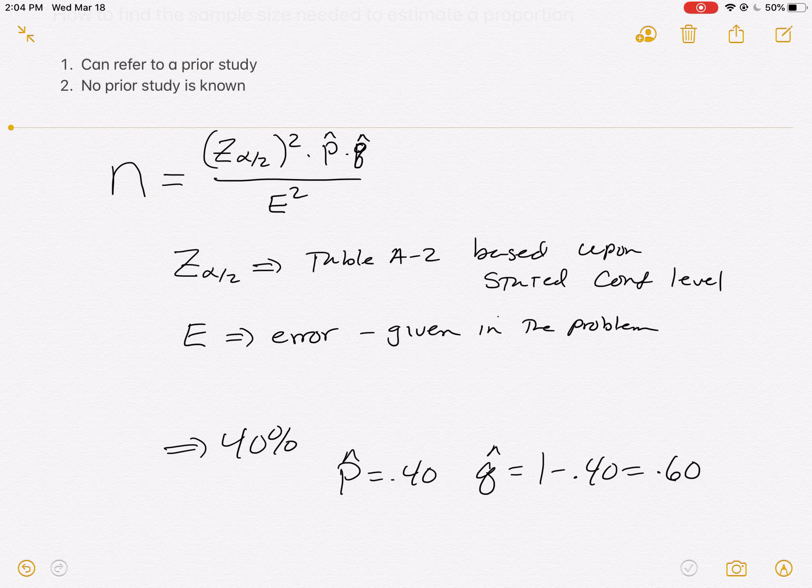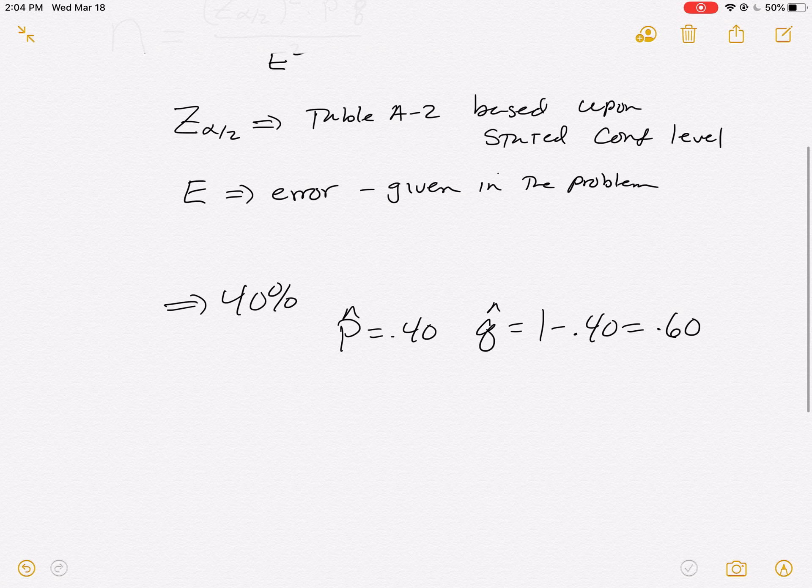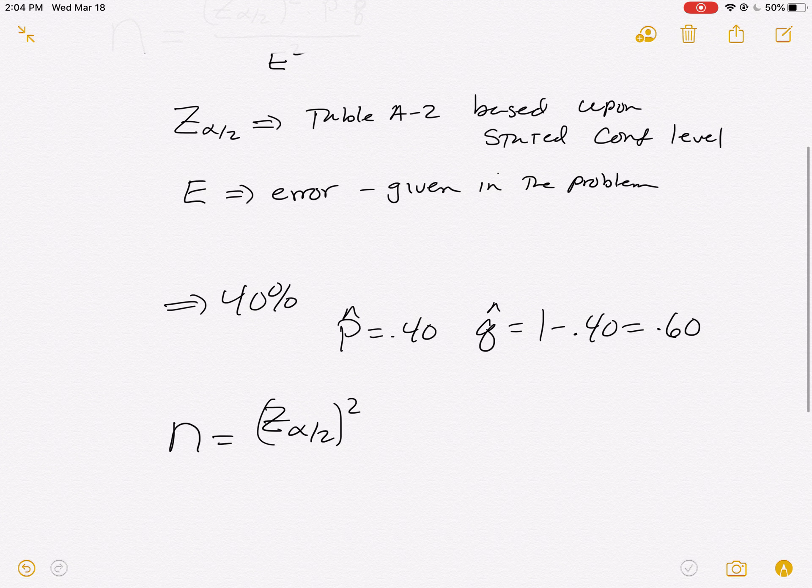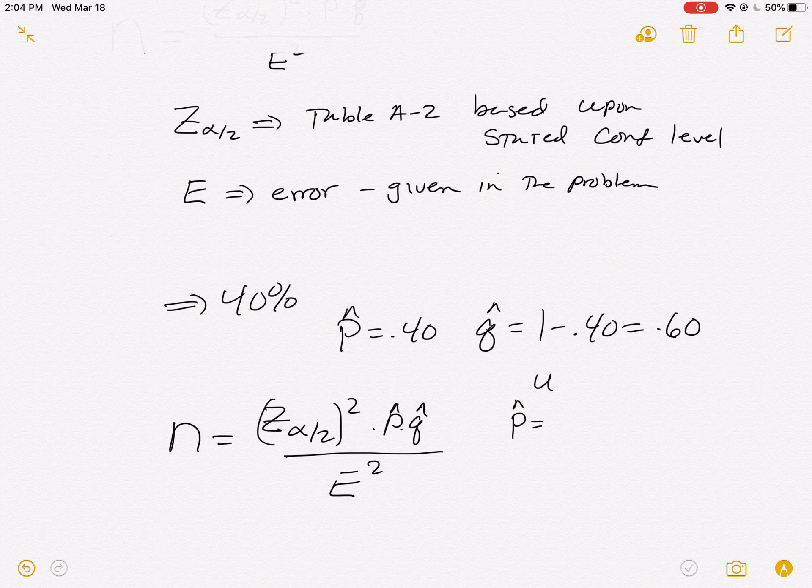The second case is there's no prior study known. If there's no prior study known, then what goes in for p hat and q hat is the biggest they could ever be. The biggest that product at least could ever be. If you don't have a prior study, if you don't have anything to put in for p hat, then you're going to let p hat be 0.5. And then q hat would also by default be 0.5.